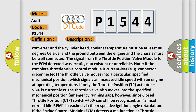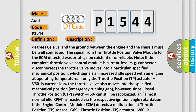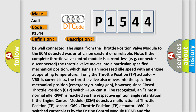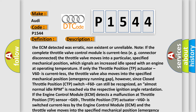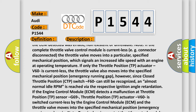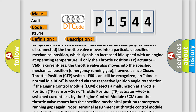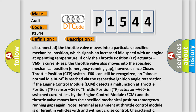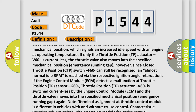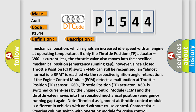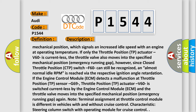Note: if the complete throttle valve control module is currentless (e.g., connector disconnected), the throttle valve moves into a specified mechanical position, which signals an increased idle speed with an engine at operating temperature. If only the throttle position TP actuator V60 is currentless, the throttle valve also moves into the specified mechanical position emergency running gap. However, since the closed throttle position CTP switch F60 can still be recognized, an almost normal idle RPM is reached via the respective ignition angle retardation. If the engine control module ECM detects a malfunction at throttle position TP sensor G69, throttle position TP actuator V60 is switched currentless by the ECM and the throttle valve moves into the specified mechanical position emergency running gap.